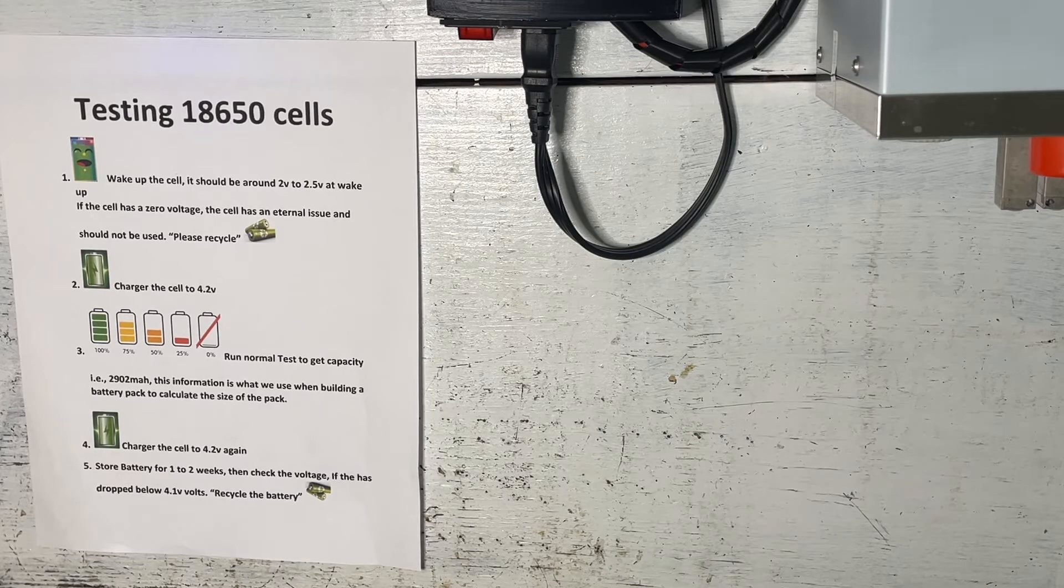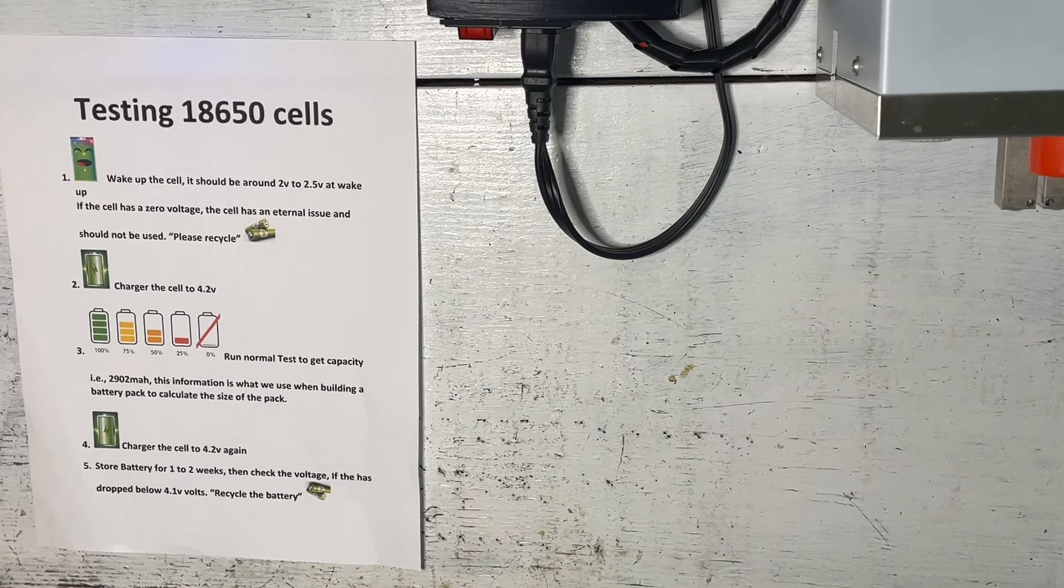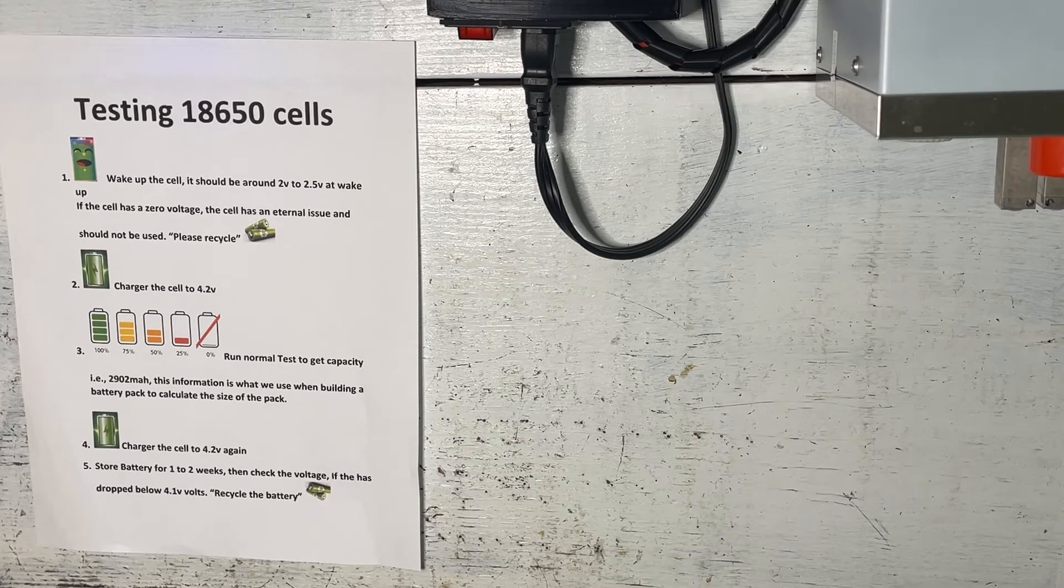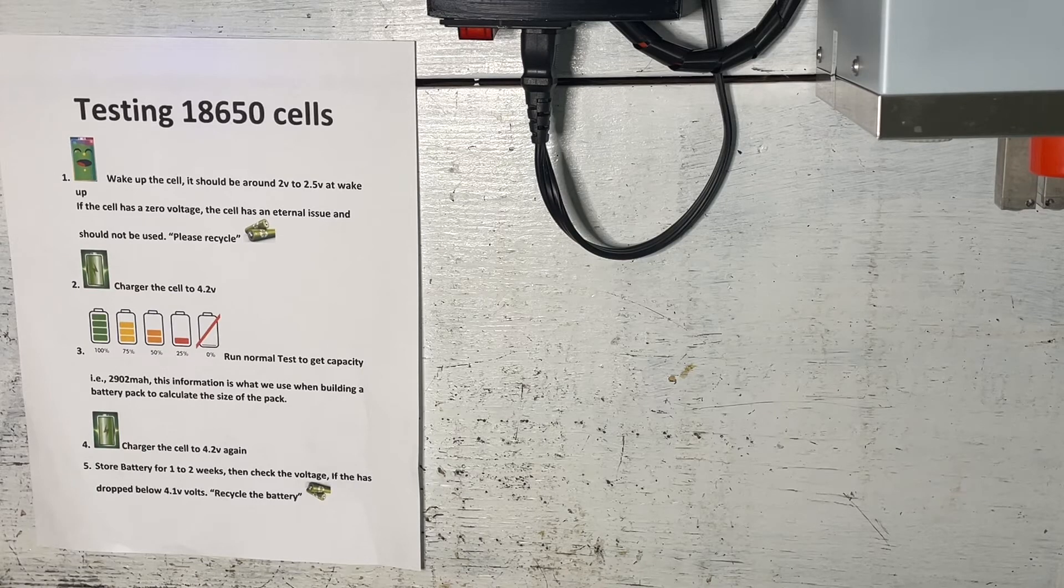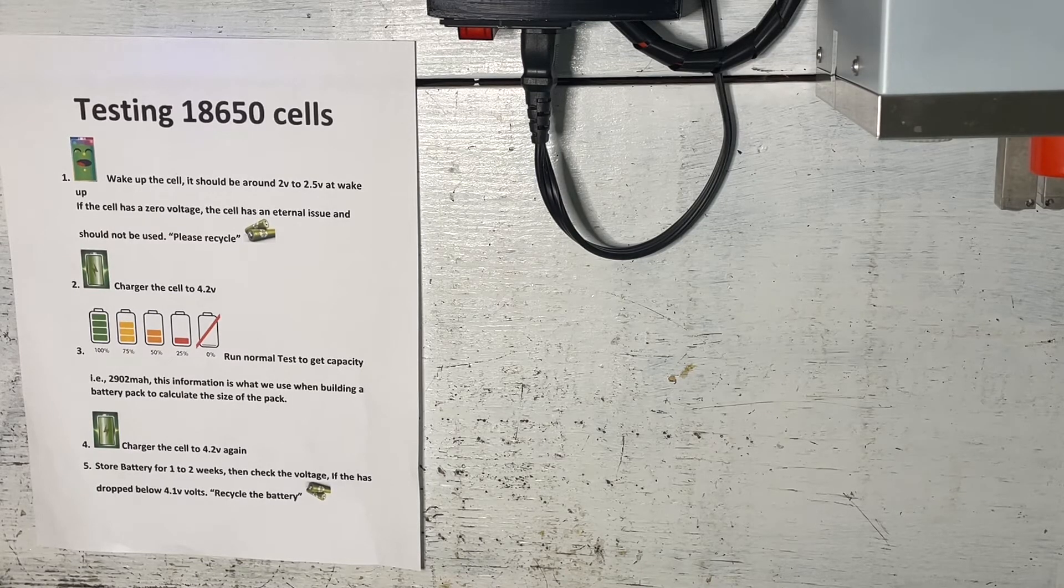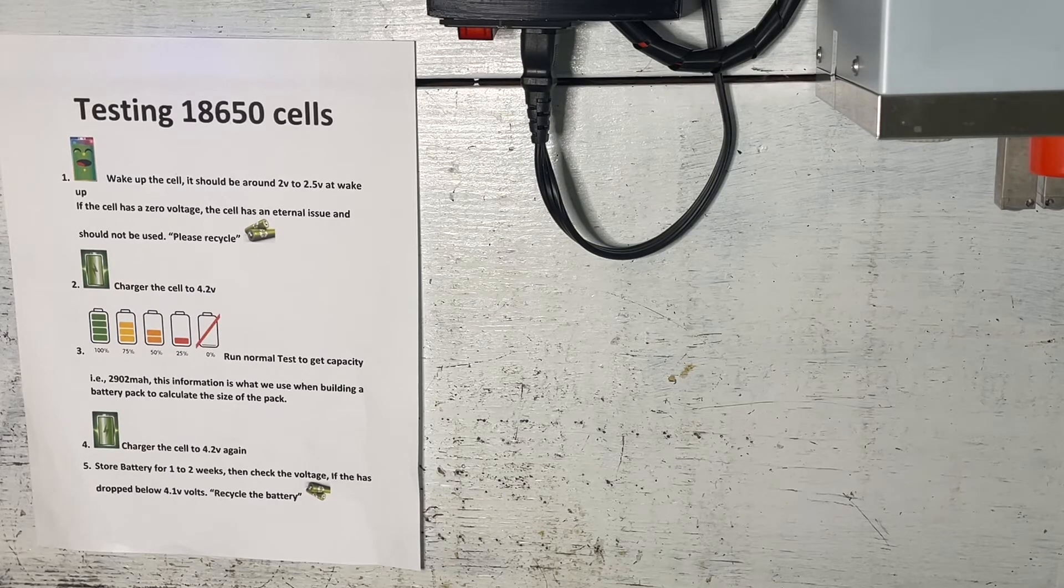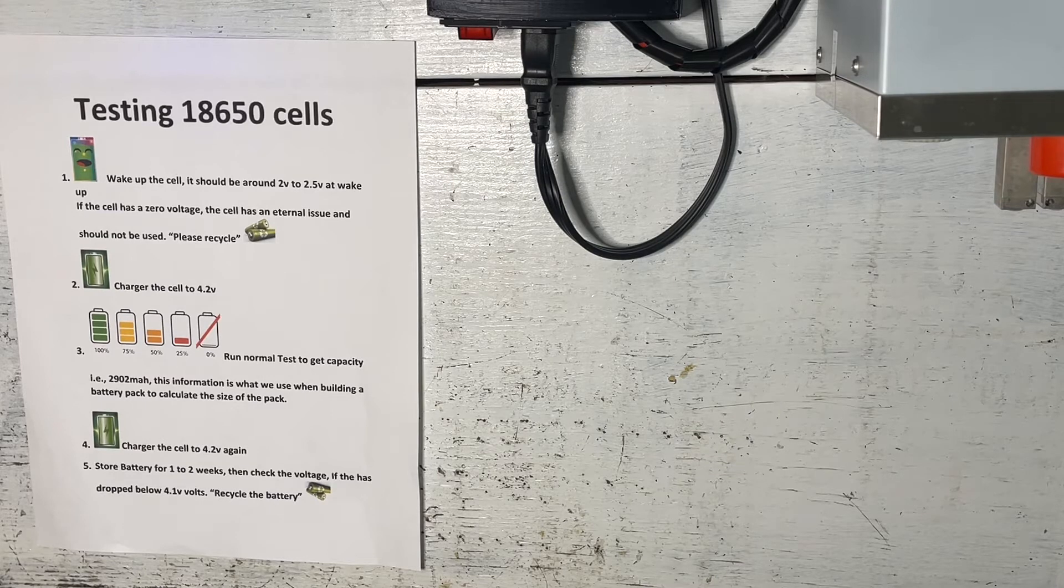Step 3 is running the normal test. This will give us the capacity of each of our batteries. Once we have the capacity, we can use those capacity numbers to figure out how many batteries we need to put in to make one cell to put into a larger battery or a power supply. So just run your normal cell, use a marker and write on the outside for now.